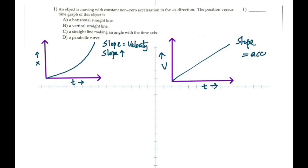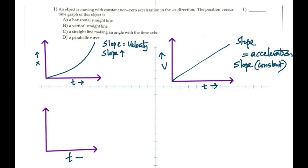In this case the acceleration is constant, so the slope is constant. Going on to the third one: can you draw the acceleration-time graph of the same object? The acceleration is constant, so the acceleration-time graph should look like a flat horizontal line. And then I asked, if you find the area of this graph, what are you going to get? What does the area of the acceleration-time graph give?